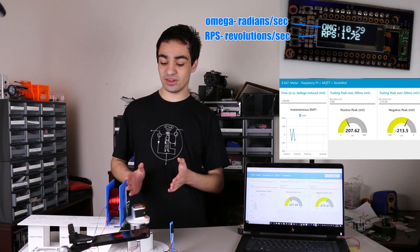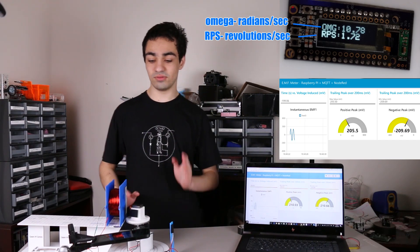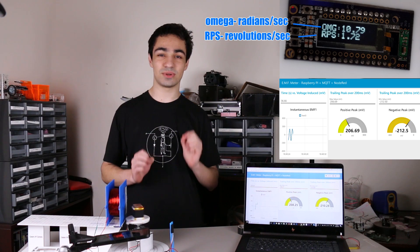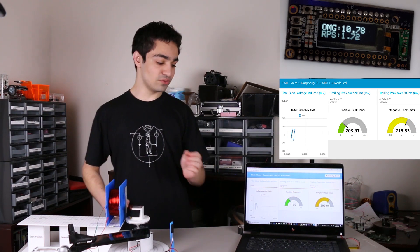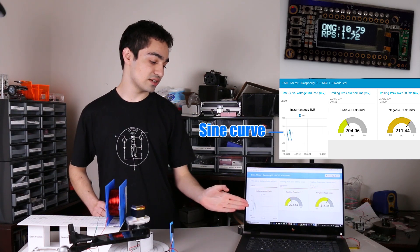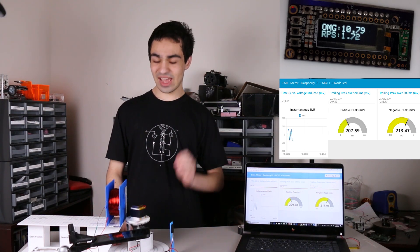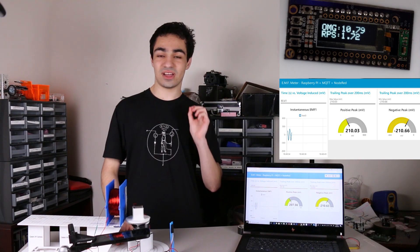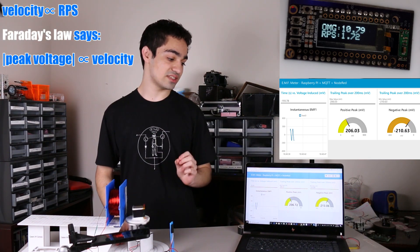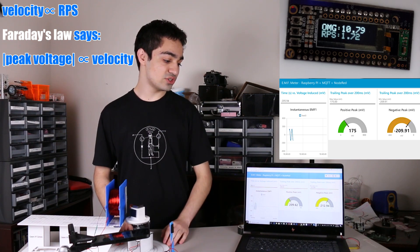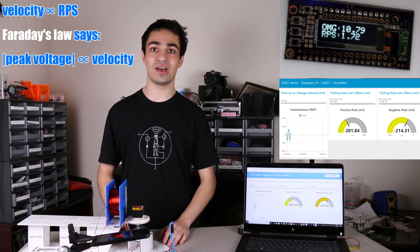Now we have the magnet rotating at a constant speed of 1.7 revolutions per second, and by Faraday's law, because it's in a circle, the voltage generated should be in a perfect sinusoidal wave as seen on the screen. And because it's at a constant revolutions per second, the peak-to-peak voltages should also be constant. As seen here, they don't change much from around 205 millivolts.